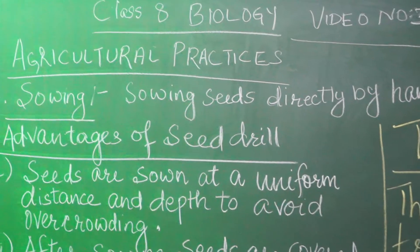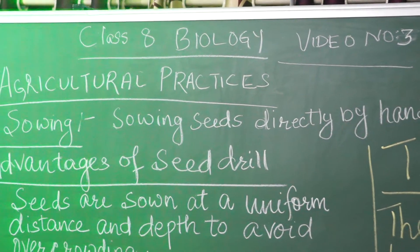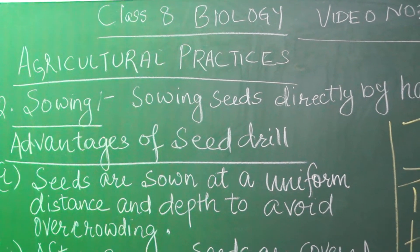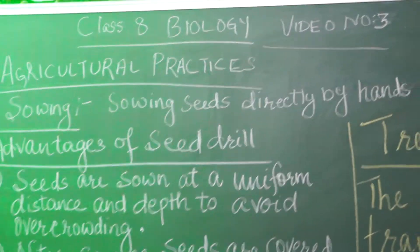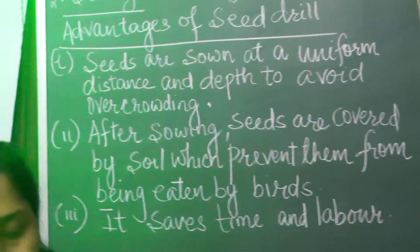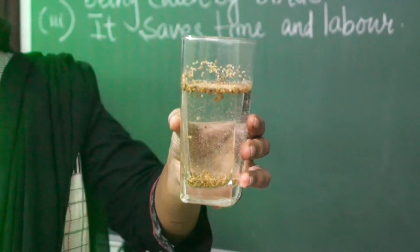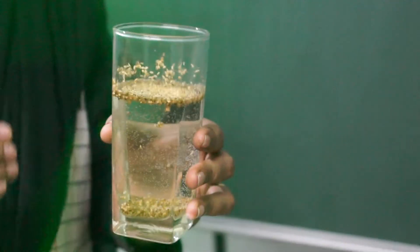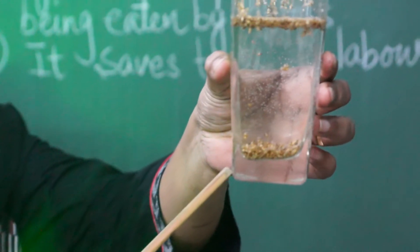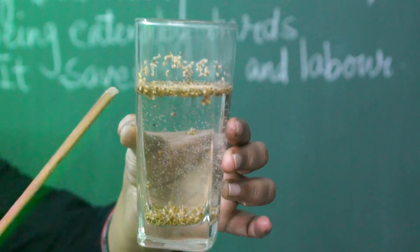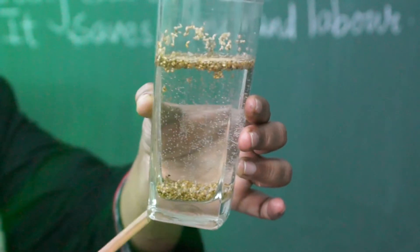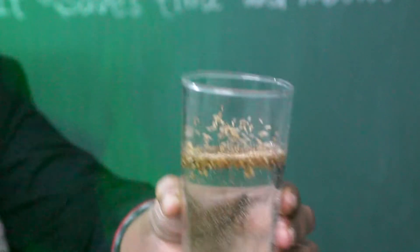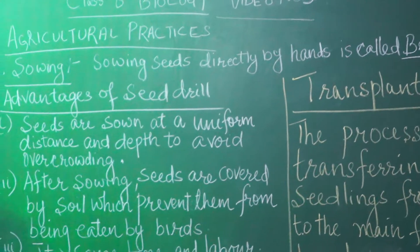Before sowing the seeds, farmers need to identify healthy seeds and damaged seeds. For this activity, the material we require is one glass of water. Take one glass of water and add one handful of seeds — any seeds, here I put some millet seeds. Some seeds settle down in the water and some float on the water. Those that float are damaged or hollow seeds, while those that settle down are healthy seeds. By this method, farmers can identify healthy seeds.